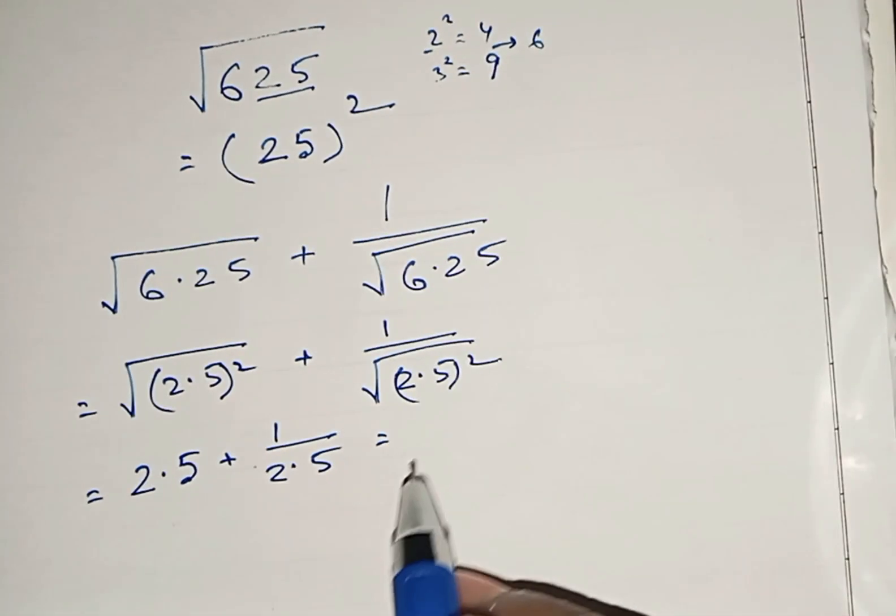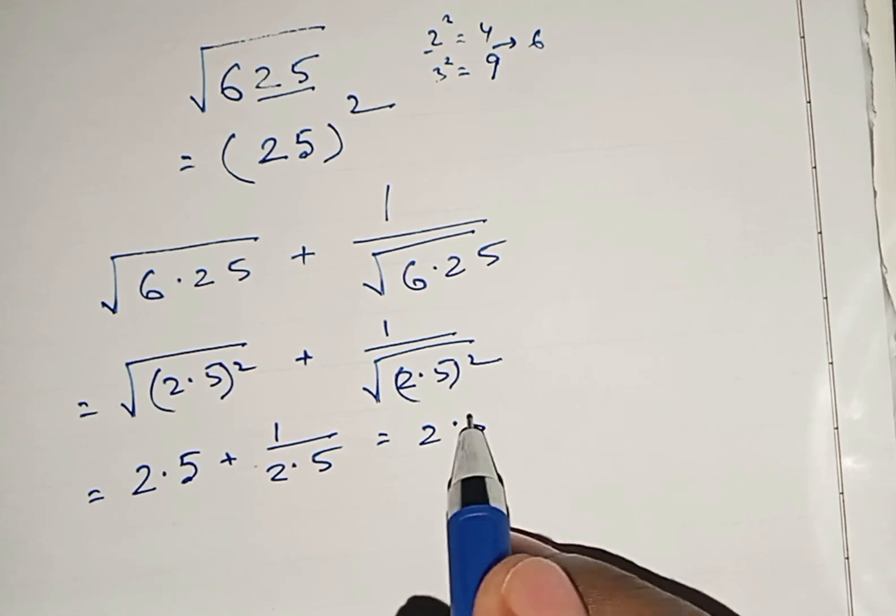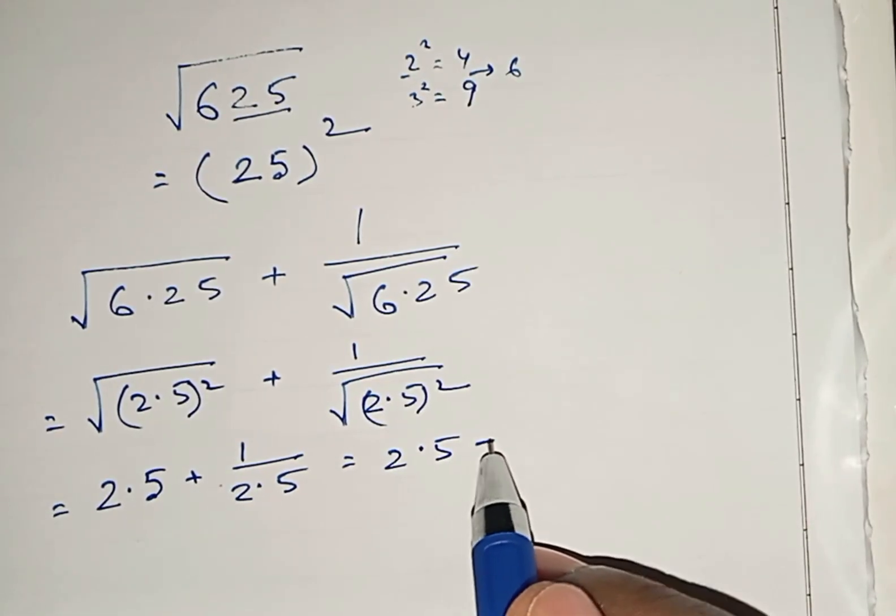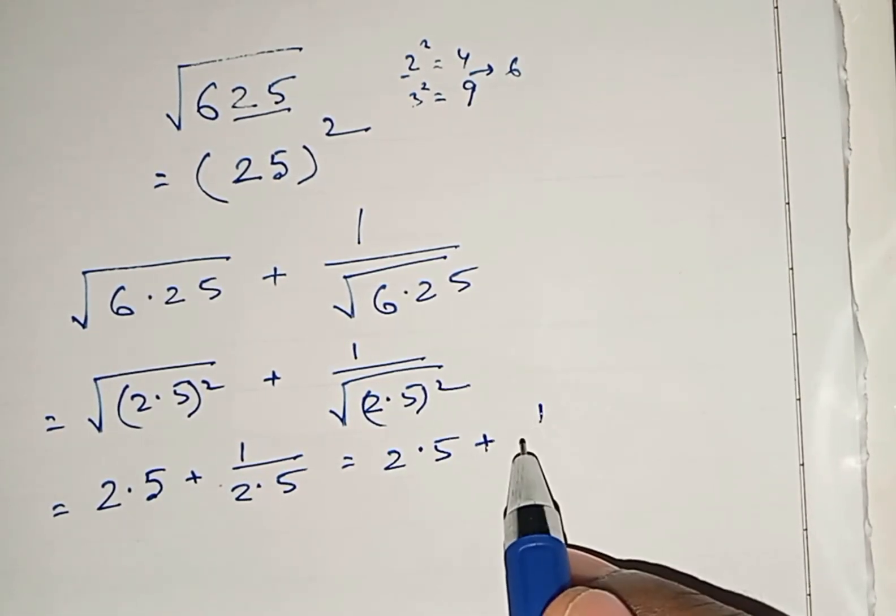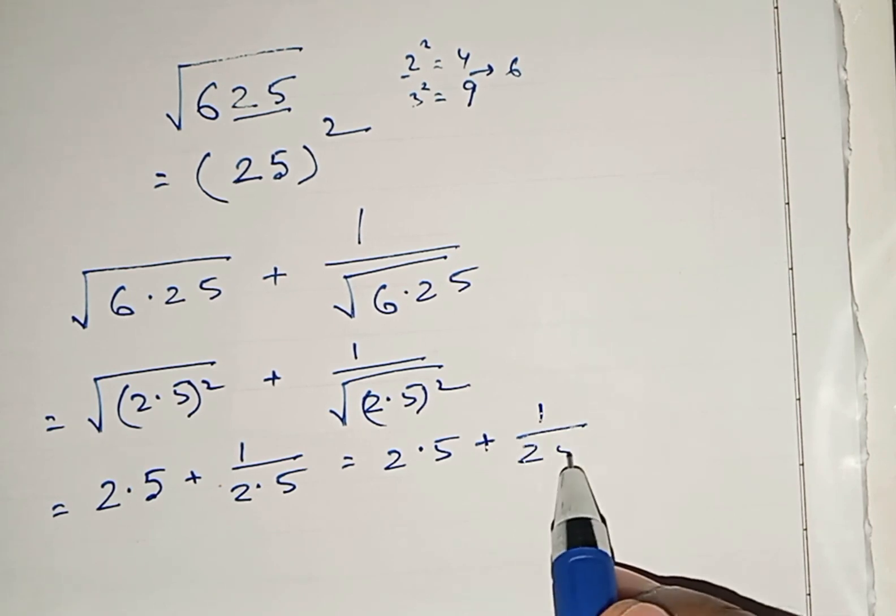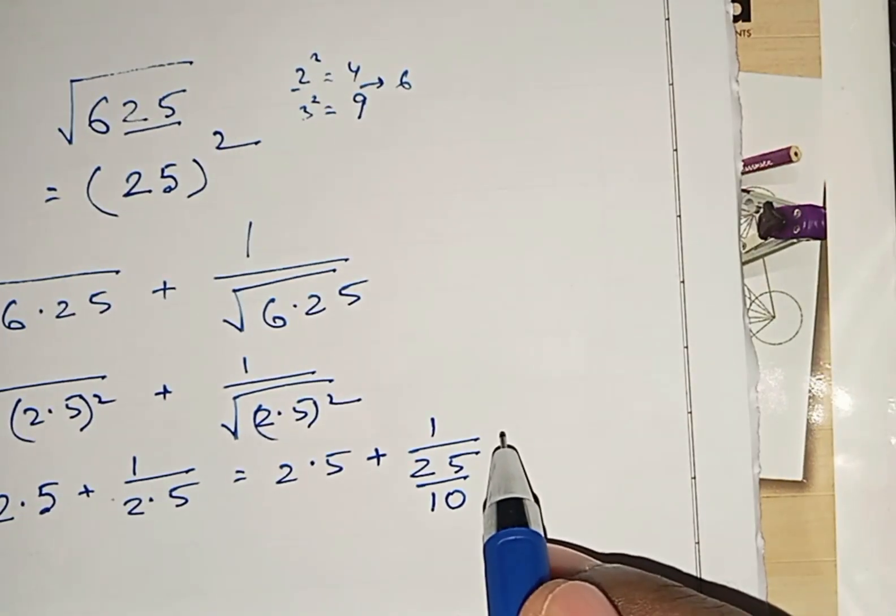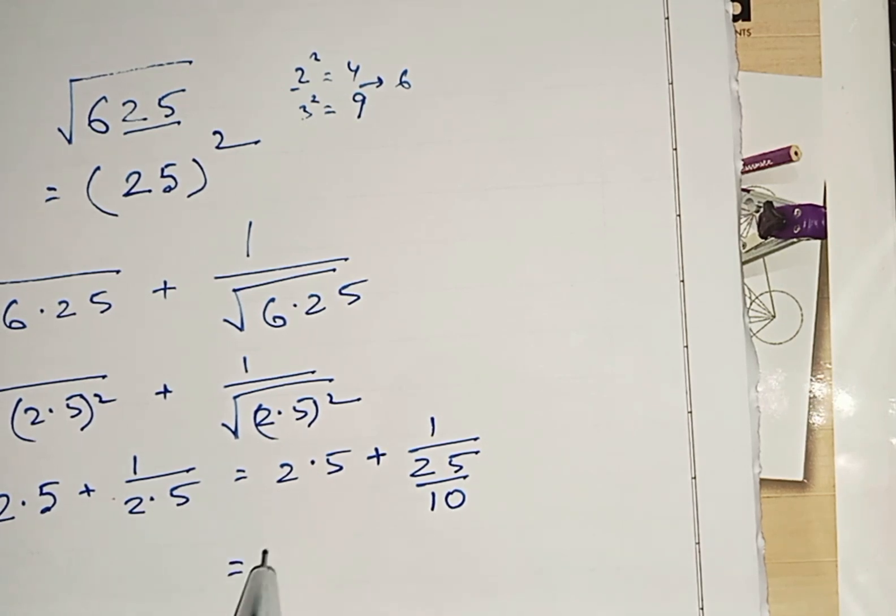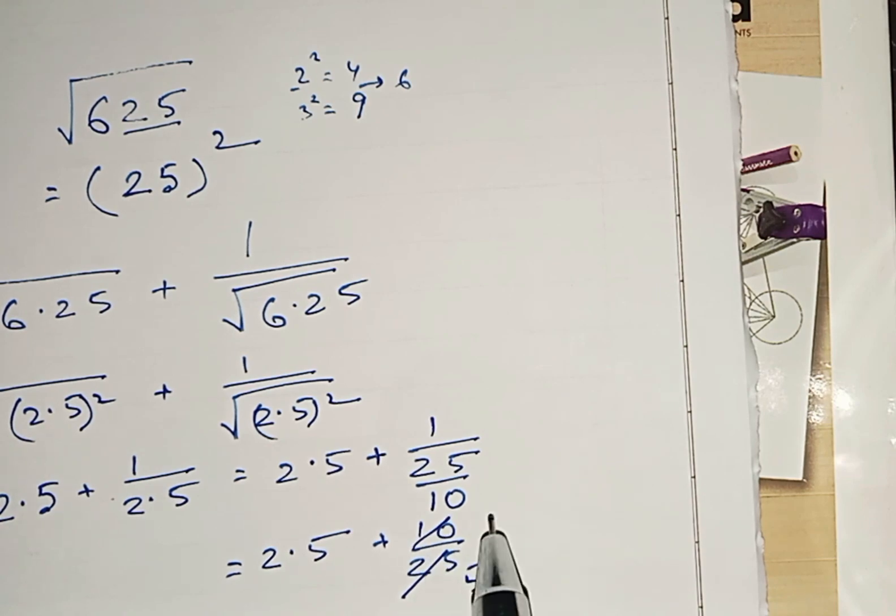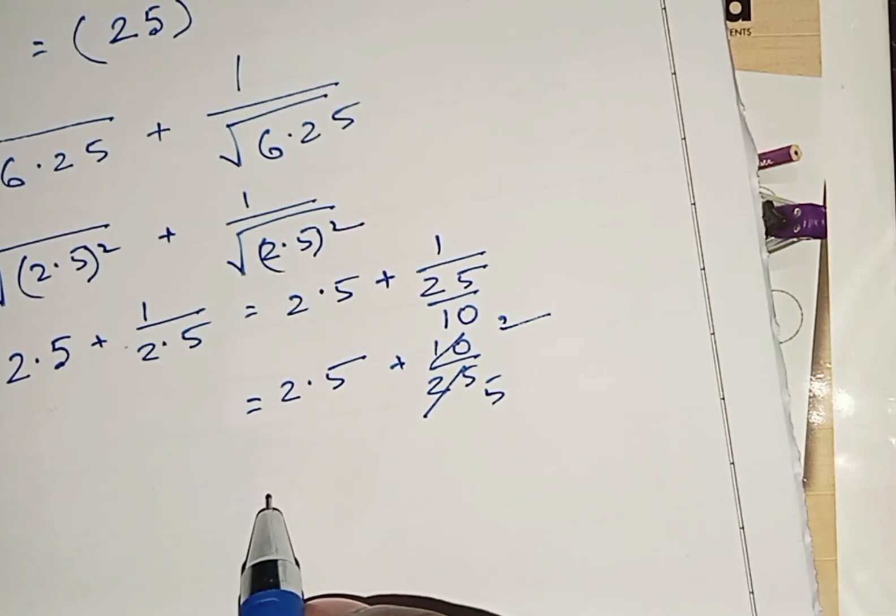So how can we solve? That equals 2.5 plus 1 which is 25 by 10. That equals 2.5 plus 10 by 25. And 10 by 25 simplifies to 2 by 5.